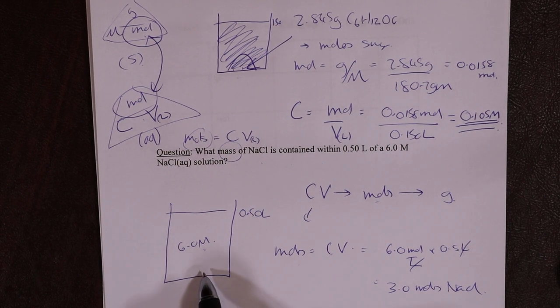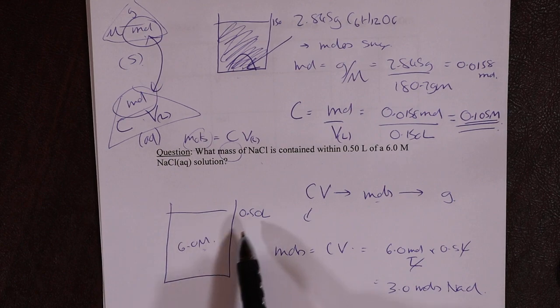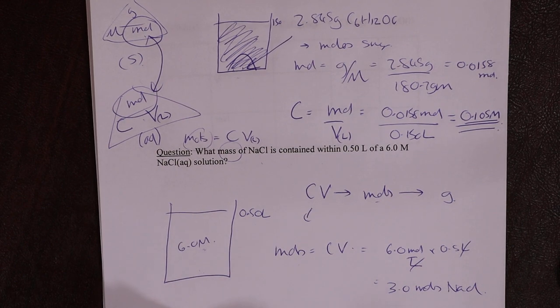3.0 moles. There's 3 moles of NaCl in there. Makes sense, yeah? Half a liter of 6 moles in 1 liter strength. 3 moles.